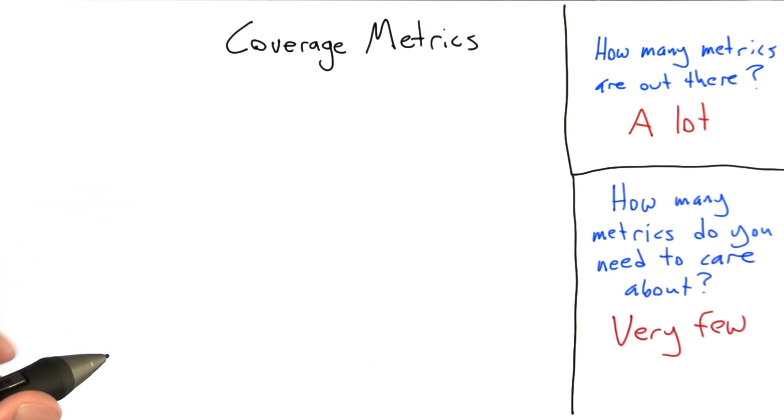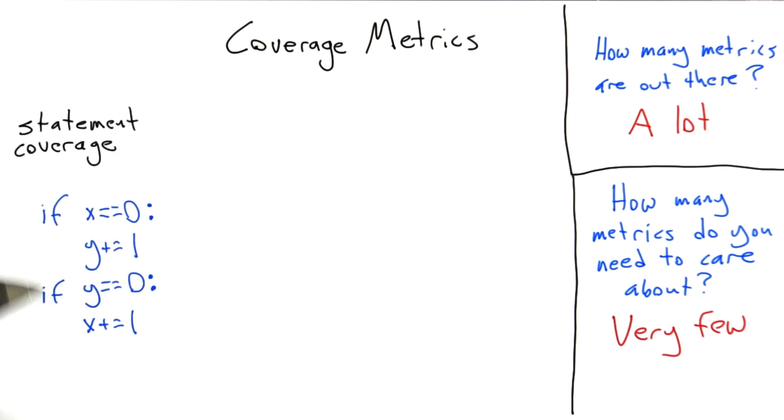So the first metric we're going to look at is called statement coverage. And this is in fact the one that's measured by default by the Python test coverage tool that we already looked at. You already have a pretty good idea of what it does, but let's just go through it in a little bit more detail. So let's use this very simple four-line code snippet as an example and try to measure its statement coverage.